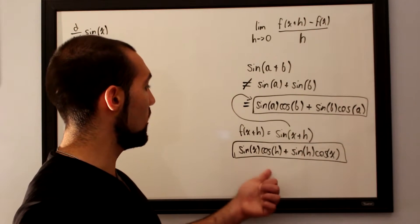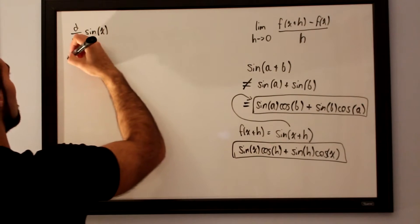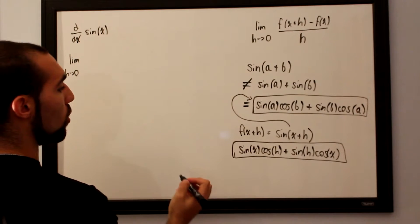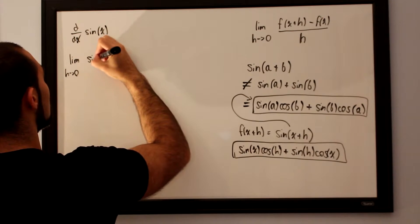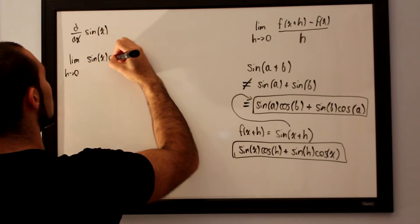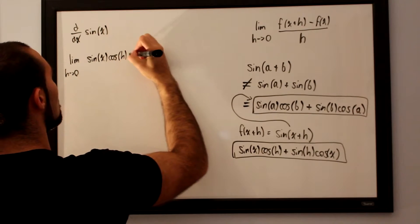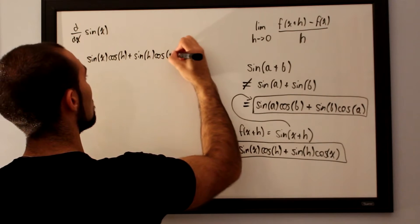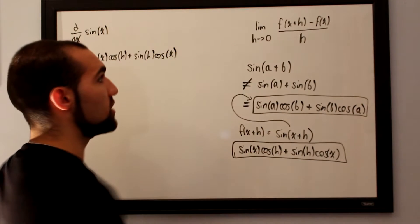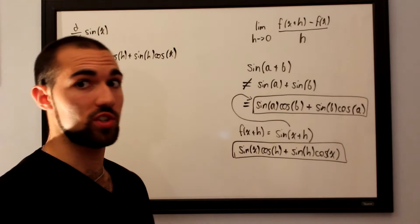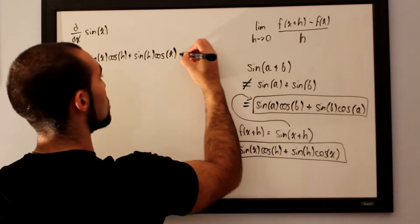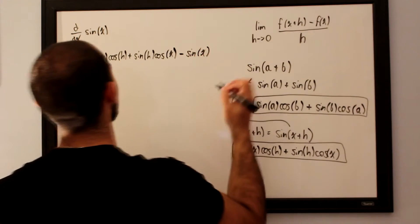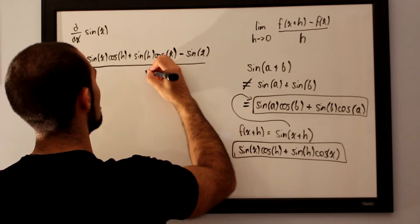We can now plug this into our formula, taking the limit as h approaches 0 of sine of x cosine of h plus sine of h cosine of x. Then we subtract off our initial function, which is simply sine of x, so minus sine of x, and divide this entire thing by h.